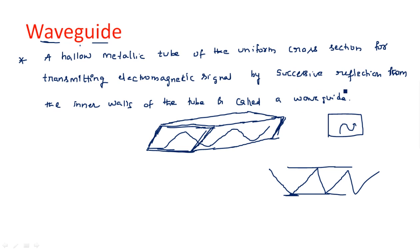By successive reflections from the inner walls of the tube, the signal is transmitted — that is called a waveguide. You don't need to memorize the definition; just understand it: a hollow metallic tube of uniform cross-section for transmitting electromagnetic signals by successive reflections from the inner walls of the tube is called a waveguide.